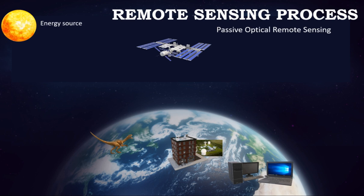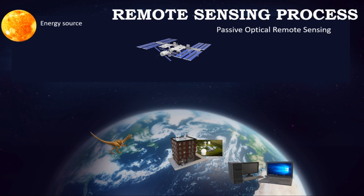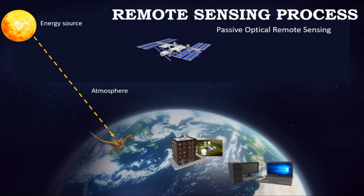As mentioned earlier, electromagnetic radiation is a prerequisite for remote sensing. The first requirement is to have an energy source that illuminates or radiates electromagnetic energy to the target of interest. As the energy travels from its source to the target, it interacts with the atmosphere it passes through — this is the second stage. When the energy source is the sun, the energy first passes through a vacuum where no interaction happens, before interacting with the earth's atmosphere. Once the energy reaches the target on the earth's surface, it interacts with the target, and depending on the properties of both the target and the incoming energy, some amount of energy is reflected.